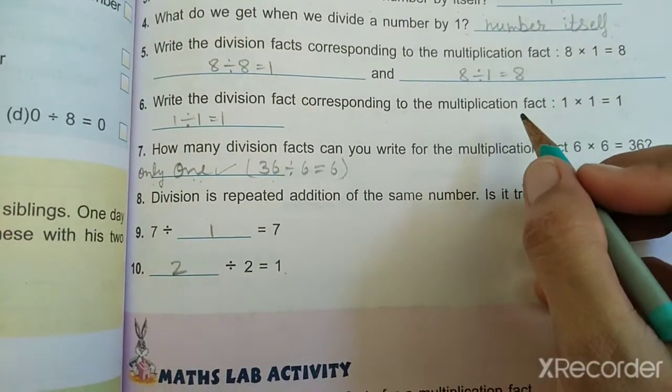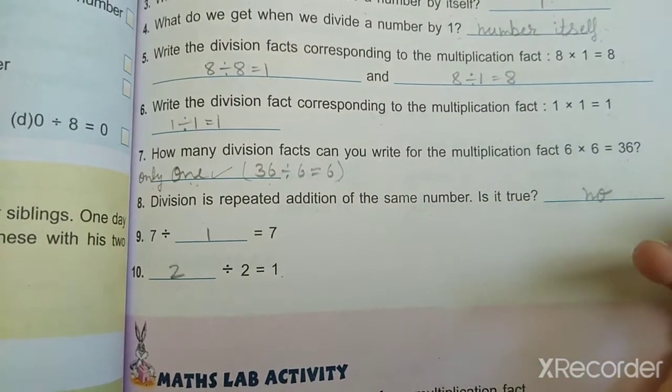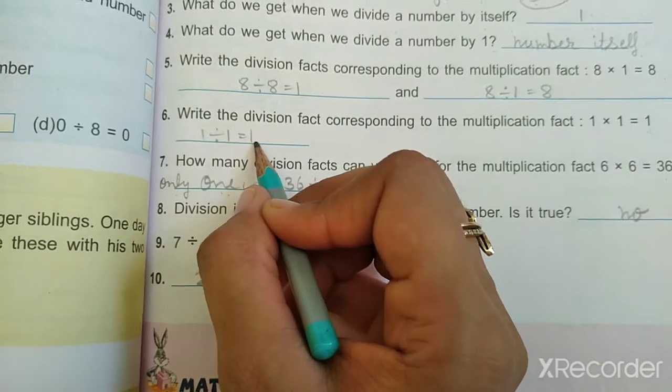Write the division fact corresponding to the multiplication fact: 1 multiplied by 1 is equal to 1. Clearly, it has only one multiplication division fact: 1 divided by 1 is 1.